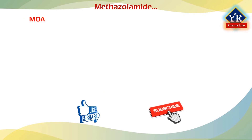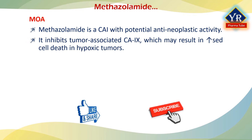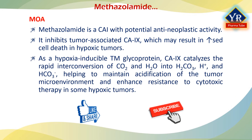Methazolamide's mechanism of action is quite similar to that of acetazolamide. It is a sulfonamide derivative and a carbonic anhydrase inhibitor with potential antineoplastic activity. It inhibits tumor-associated carbonic anhydrase, which may result in increased cell death in hypoxic tumors. Hypoxia is a condition in which the body or a region of the body is deprived of adequate oxygen supply at the tissue level. As a hypoxia-inducible transmembrane glycoprotein, carbonic anhydrase catalyzes the rapid interconversion of carbon dioxide and water into carbonic acid, protons, and bicarbonate ions, helping to maintain acidification of the tumor microenvironment and enhance resistance to cytotoxic therapy in some hypoxic tumors.